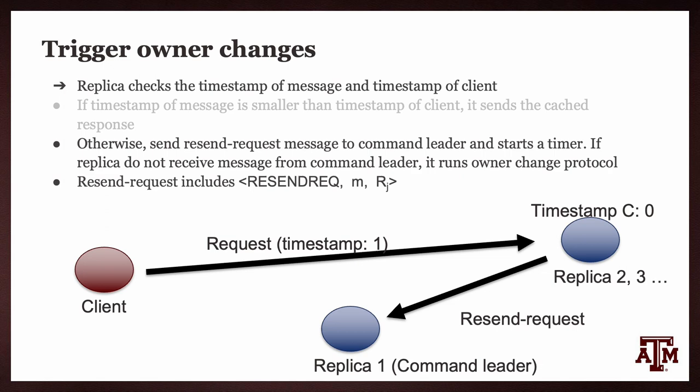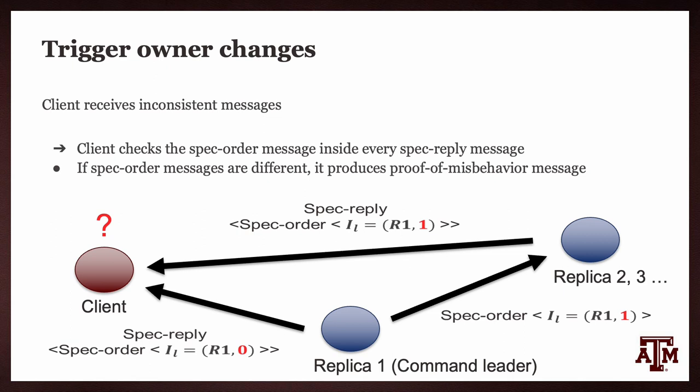Another situation is when the command leader is a Byzantine replica that sends different spec order messages to different replicas. The client can detect this by checking the spec order message inside each spec reply message — since spec order messages must be signed by the command leader, other replicas cannot fake them. If the client finds differences between spec order messages, the command leader must be faulty. The client then produces a proof of misbehavior message and sends it to all replicas.